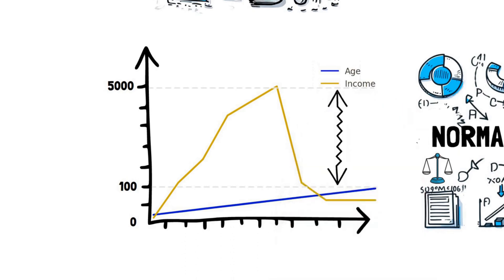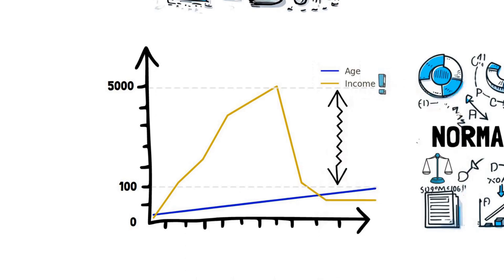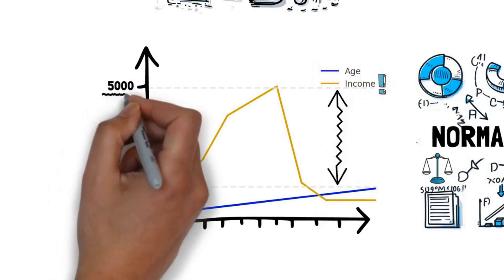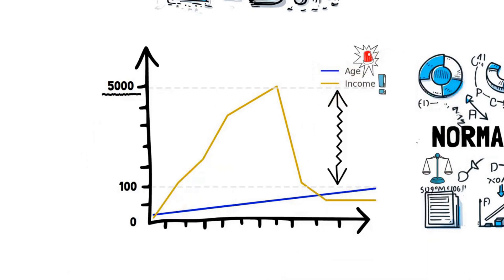If we feed these directly into our network, the model might give undue importance to income just because its values are larger, even if age might be more relevant for the prediction.